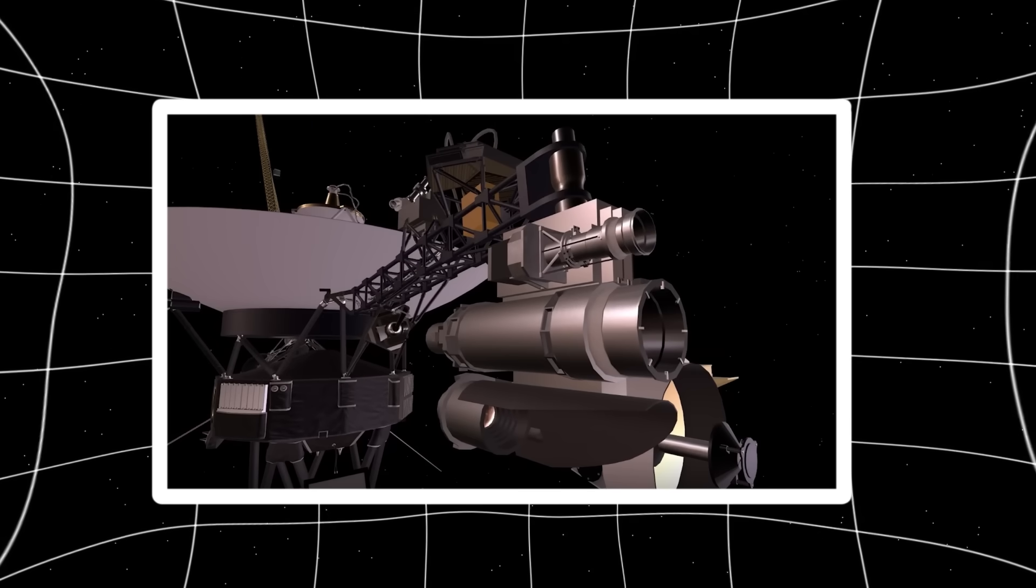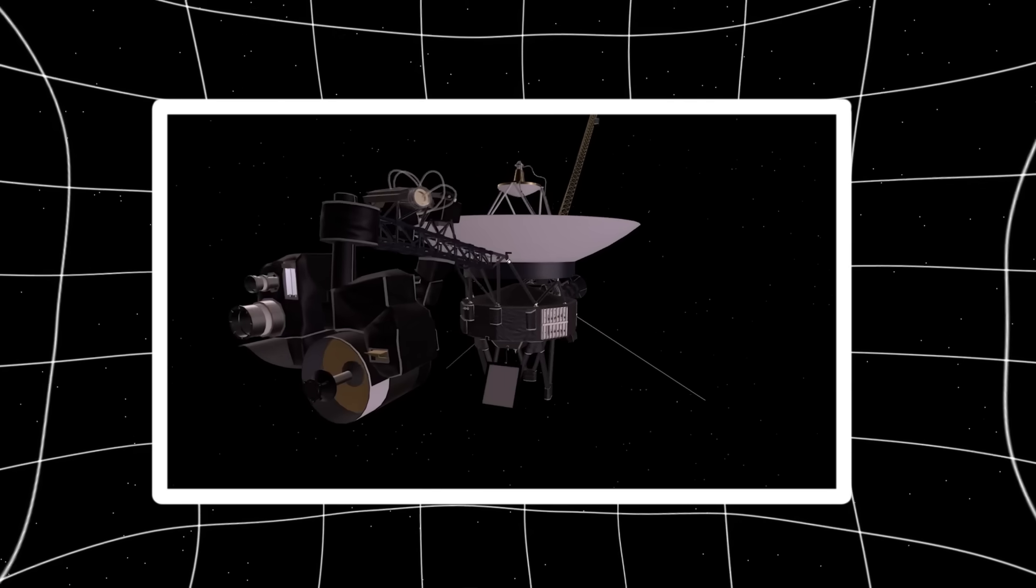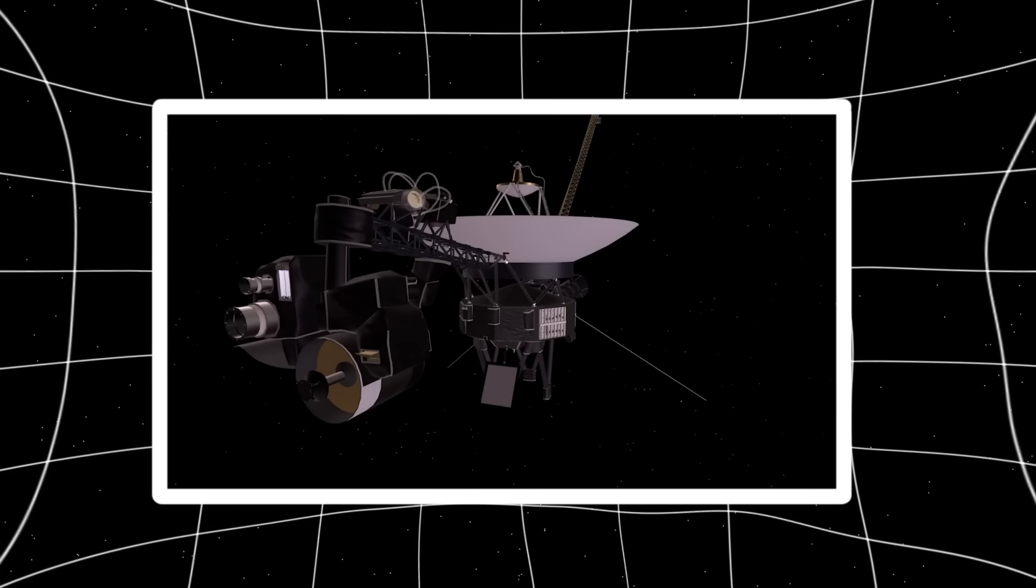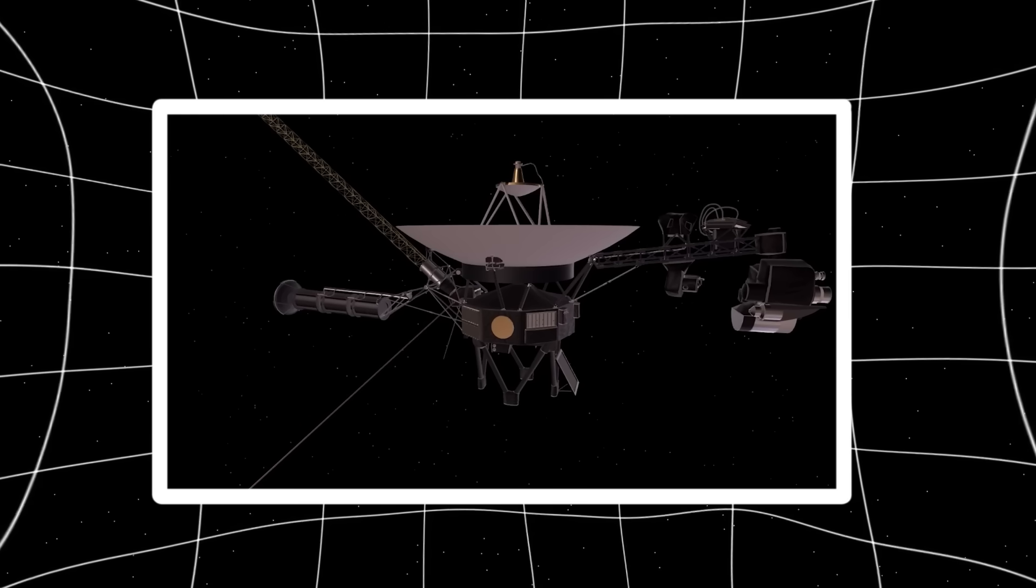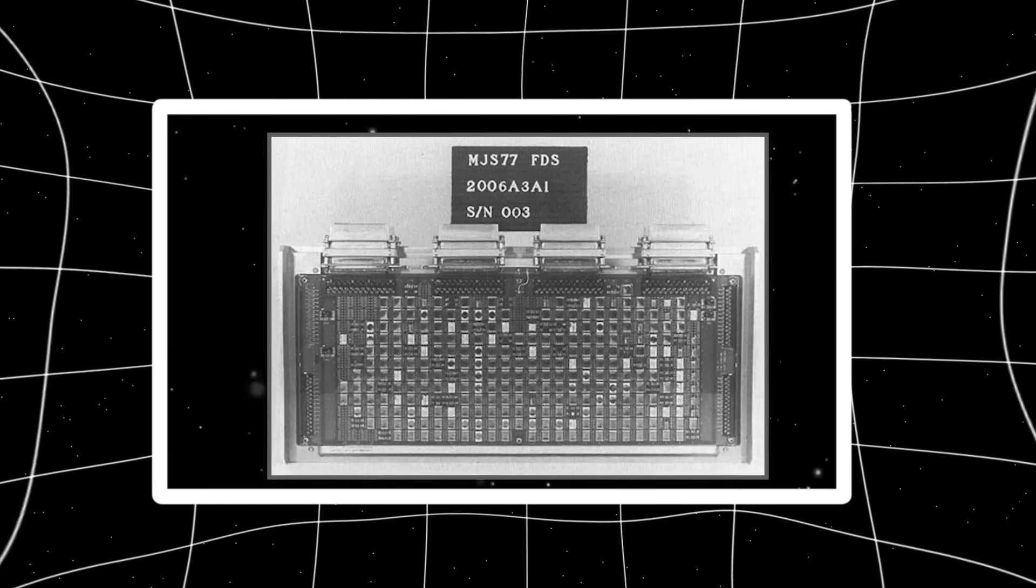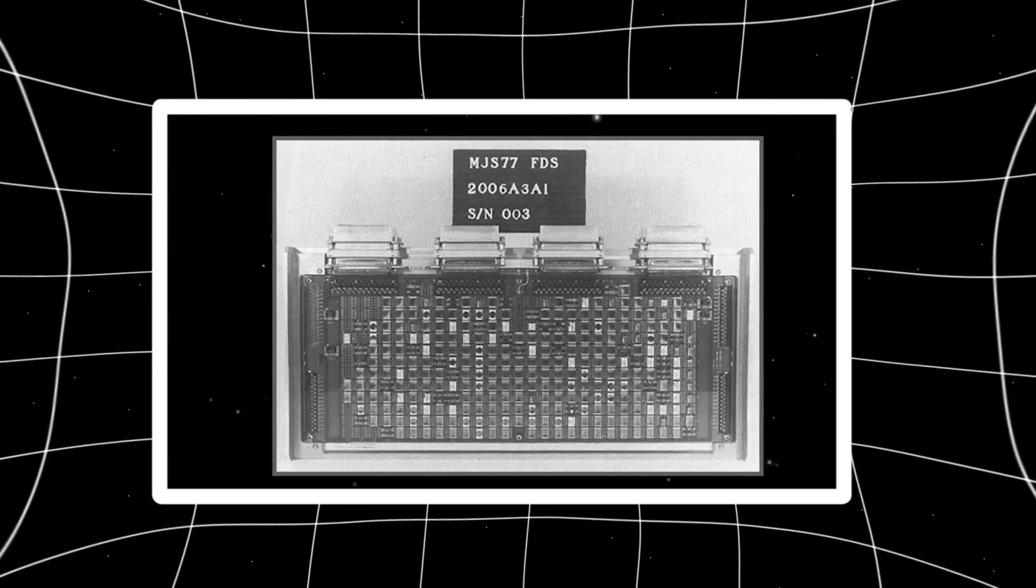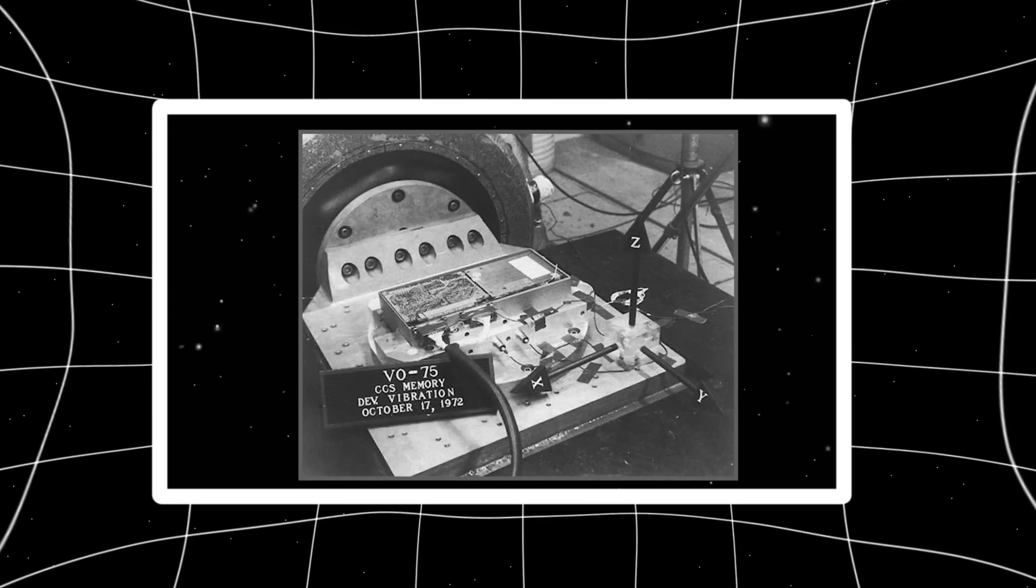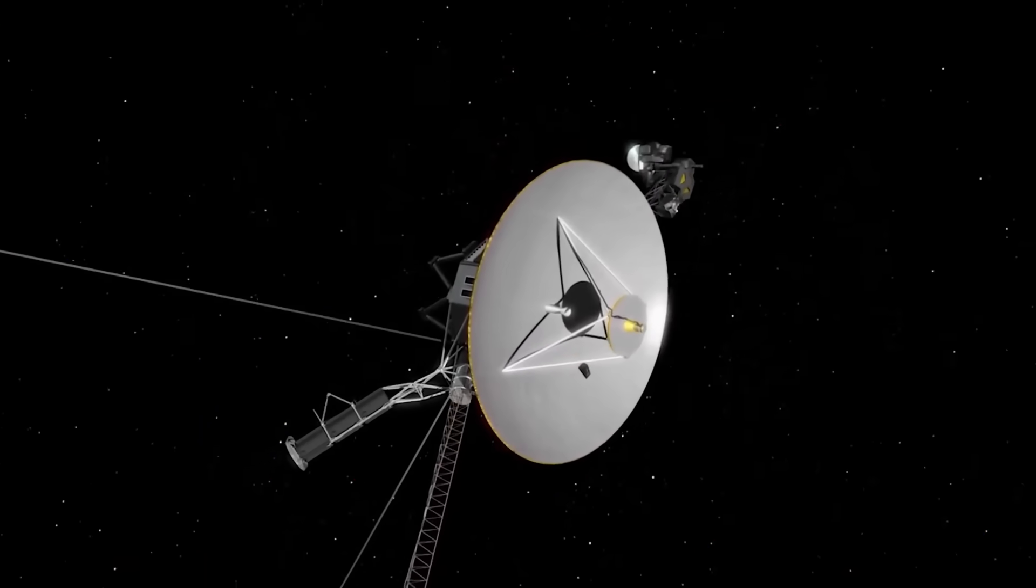Think about it: this probe was built using 1970s technology. Its memory capacity is a joke by today's standards. It uses eight-track magnetic tapes for storage, its central computer is dwarfed by the computing power of your microwave oven, and yet for more than 45 years this little machine has traveled farther than any object we've ever built—beyond the orbit of Neptune, beyond the grasp of the sun's magnetic field, into the black ocean of interstellar space.